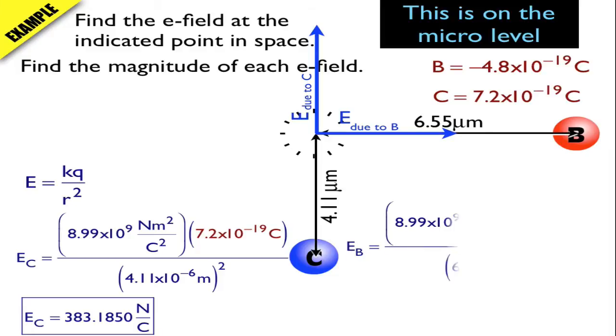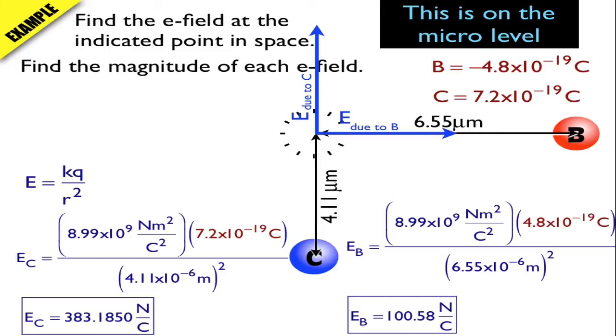And that gives me the field strength for C. So the electric field strength is 383 newtons per coulomb. I'll do the same thing for B, put in the numbers that are associated with B. And when I do that, I get about 100 newtons per coulomb. So that's the length of each one of those arrows, the blue arrows, E due to C and E due to B.